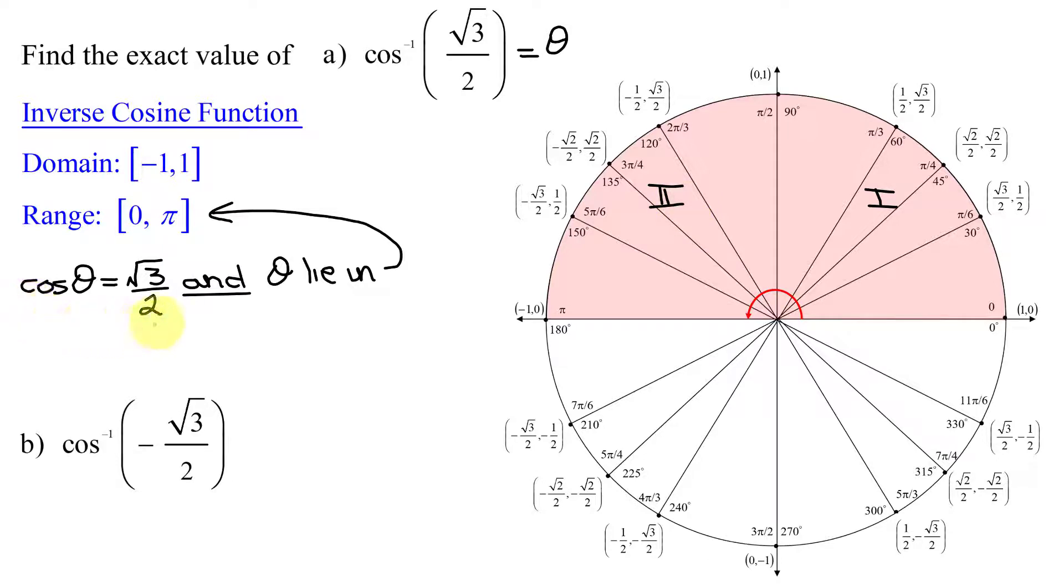I'm looking for the cosine of theta to be a positive number. Remember, the cosine of theta is the x-coordinate of points on the unit circle. The x-coordinate is positive in quadrant 1 and negative in quadrant 2.